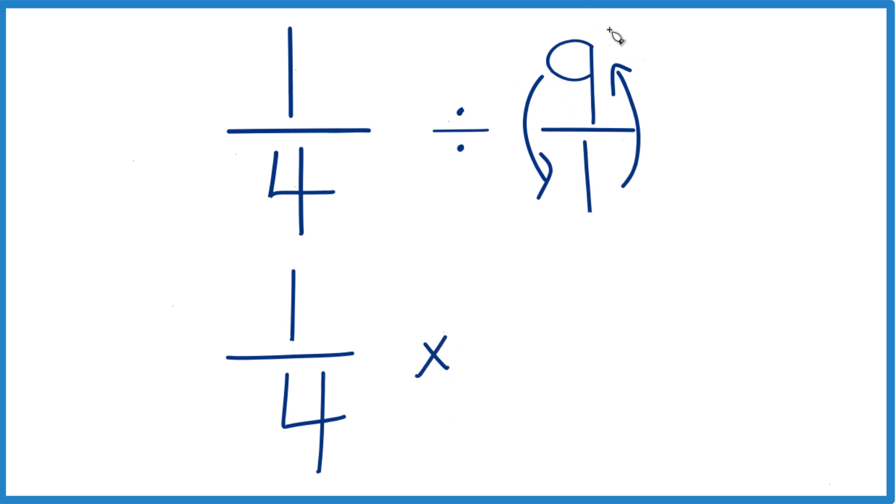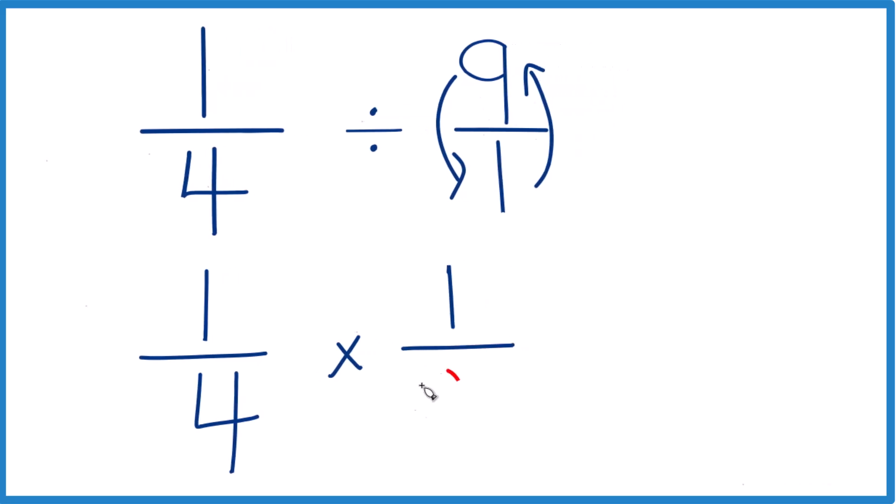So one's on top, nine's on the bottom, one-ninth, and then we multiply. One times one, that's one. Four times nine, that's thirty-six. So one-fourth divided by nine, or one-fourth times nine, that equals one-thirty-sixth.